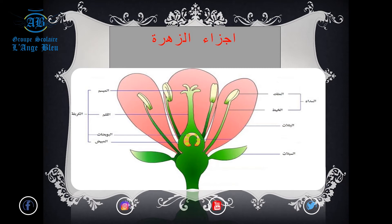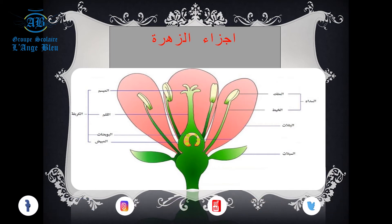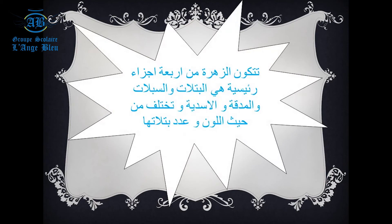كما تعلمون بأن المدقة هي الجزء الأنثوي والأسدية هي الجزء الذكاري. وتختلف الزهرة من حيث اللون وعدد بتلاتها.